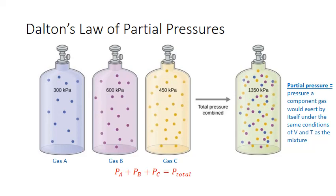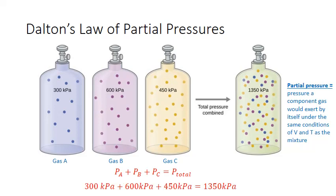In this case, the partial pressure of gas A is represented by P sub A, the partial pressure of gas B is represented by P sub B, and the partial pressure of gas C is represented by P sub C. This is another statement of Dalton's Law of Partial Pressures. Substituting our numbers: 300 kilopascals for gas A, plus 600 kilopascals for gas B, plus 450 kilopascals for gas C, adds up to give us 1,350 kilopascals — the pressure of our total mixture.